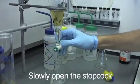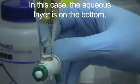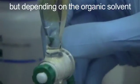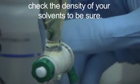Slowly open the stopcock and drain the aqueous layer. In this case the aqueous layer is on the bottom, but depending on the organic solvent, it may be on the top. Check the density of your solvent to be sure.